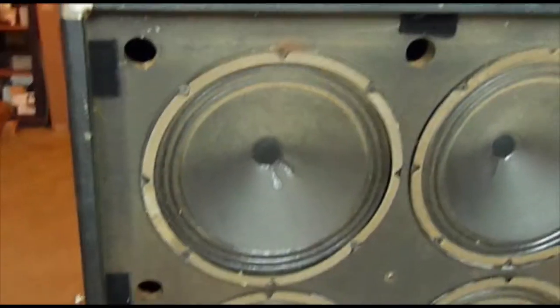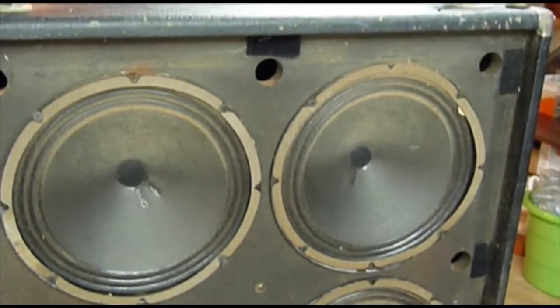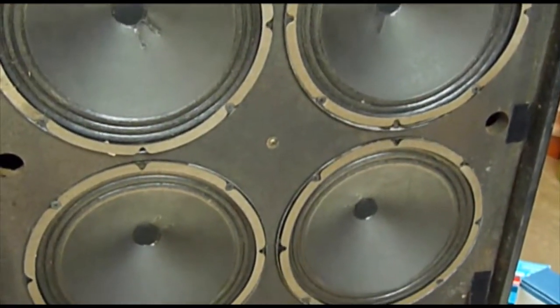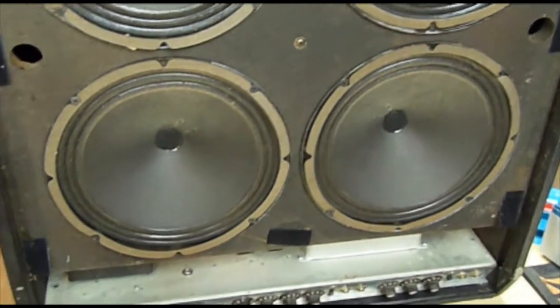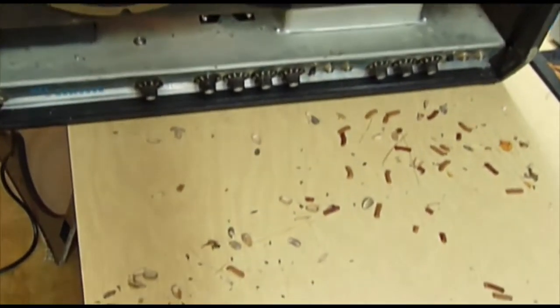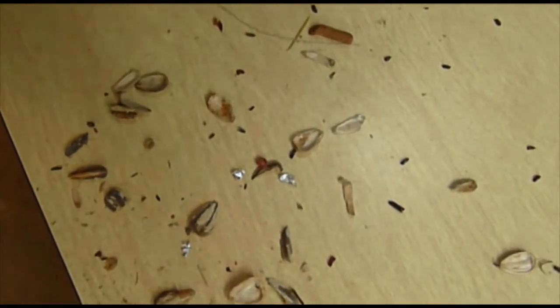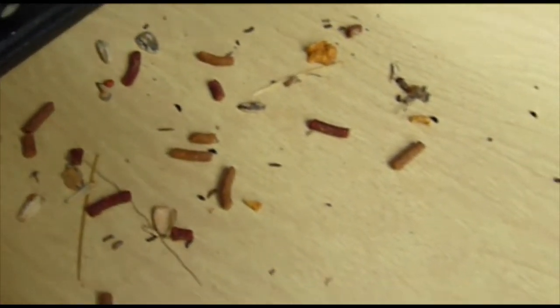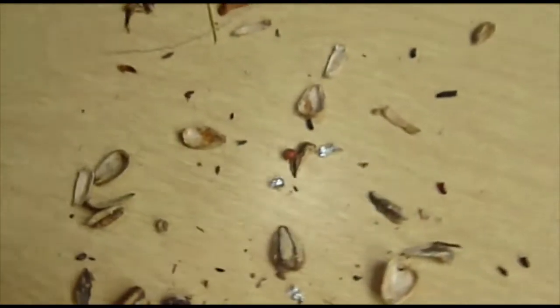I've got the amp upside down on my bench right now to help facilitate getting the chassis out. Chassis bolts are out. It's loose. I just wanted to give you a quick view here of what was inside the box. Mouse detritus. Mouse bait, it looks like. Got a few mouse turds. That's just what's landed on the table. There's a little bit more on the floor.